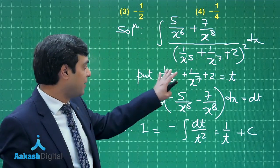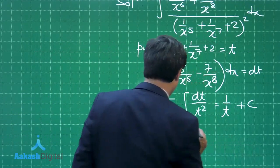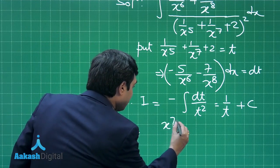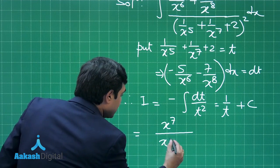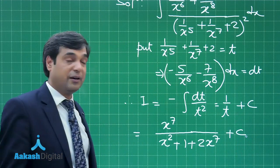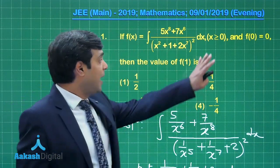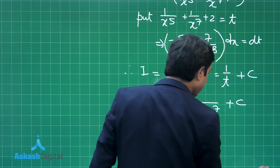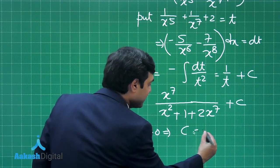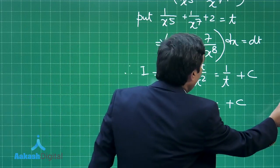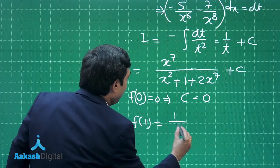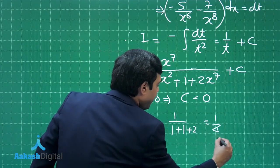Substituting back the value of t, we can take the LCM and write the numerator as x⁷ divided by (x² + 1 + 2x⁷) plus constant of integration. Now f(0) = 0, so putting x = 0: 0 = 0 + C, which gives C = 0. Now we are looking for the value at x = 1. Therefore f(1) = 1/(1 + 1 + 2) = 1/4.